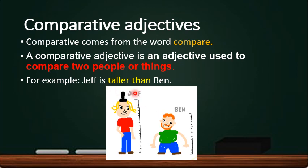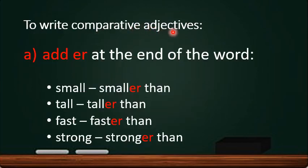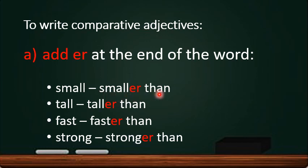Jeff is taller than Ben. To write a comparative adjective, we can add -er at the end of the word. For example: small — we add -er at the end, so it becomes smaller than. Tall becomes taller than. Fast becomes faster than. Strong becomes stronger than.